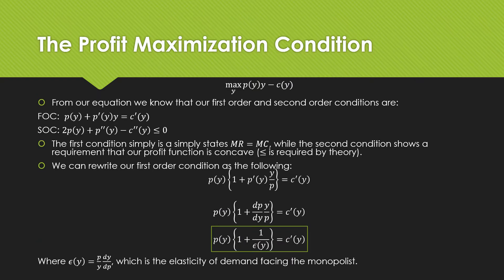So from our equation, it follows that our first order and second order conditions are the following. The first condition simply states that marginal revenue equals marginal cost, while the second condition shows that the requirement is that our profit function must be concave.